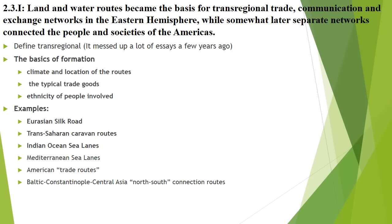AP expects you to know six examples of these land and water routes. The ones in bold are called the Big Three of this time period — they're the heavy hitters, and we're going to break down each one in depth. The first is the Eurasian Silk Road, the next is the Trans-Saharan caravan route, and the third is the Indian Ocean sea lanes.